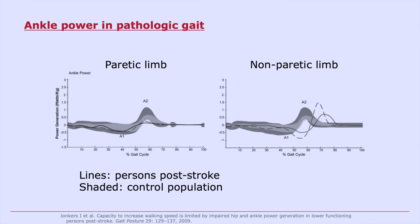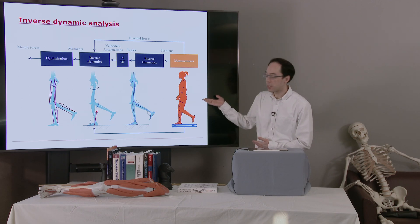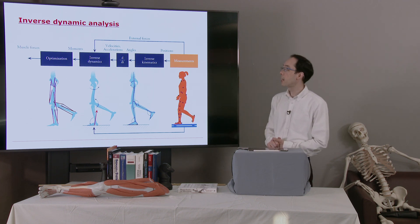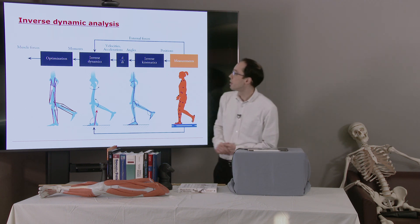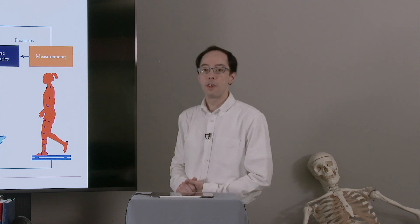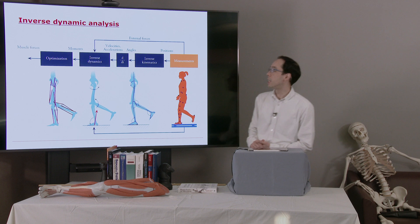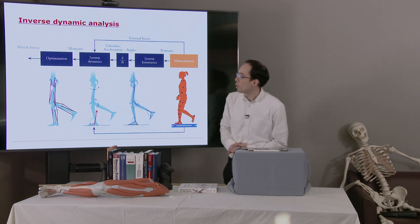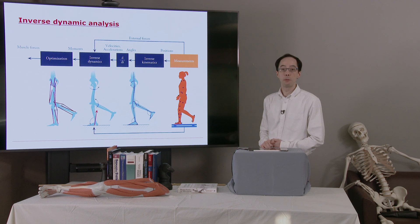Let's remind ourselves where we are in this inverse dynamic analysis. We might have brought a subject into the lab to collect motion capture data. We've used inverse kinematics to compute the skeletal joint angles, taken derivatives — hopefully after some filtering if necessary — and computed the joint angular velocities and angular accelerations. Now we'll use this information in an inverse dynamics analysis to compute the net joint moments. In Chapter 9, we'll take it one step further and look at what the muscle forces must have been in order to generate these net joint moments.